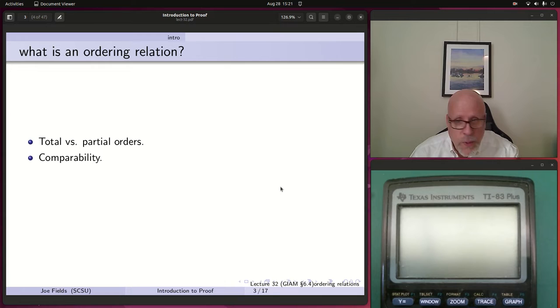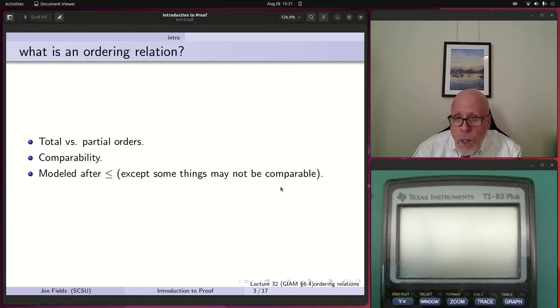The big issue is comparability. Is it always possible to compare two things? In a total order, it is. If you have two distinct things, then the order is going to tell you which one is bigger, which one is smaller. But in a partial order, not so much.